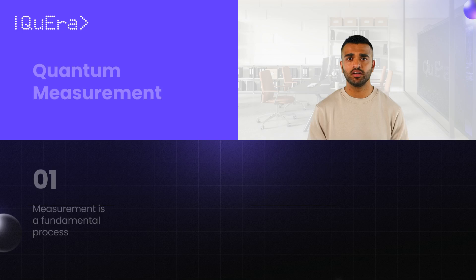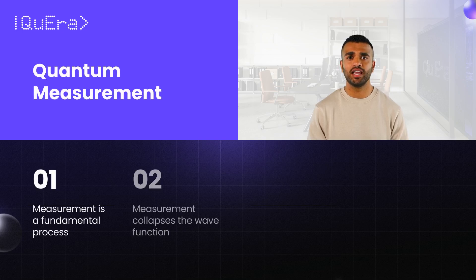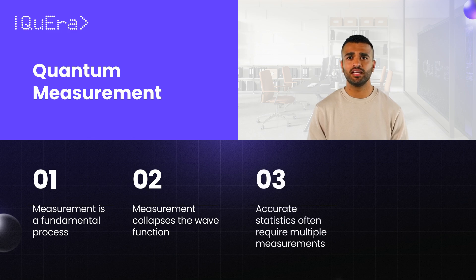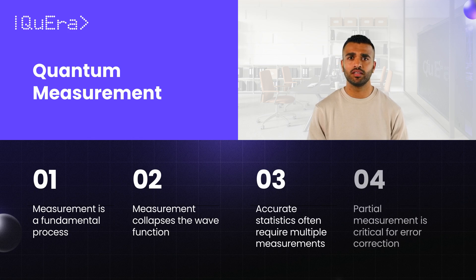In summary, quantum measurement is fundamental to quantum computing. Measurement collapses the wave function of a qubit, decisively determining its state as either zero or one. Often, systems are repeatedly reset and measured to obtain accurate statistics. Partial measurement is critical for error correction.